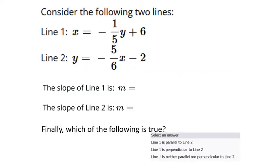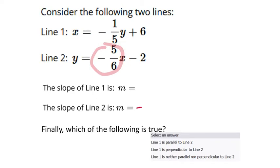Consider these two lines. I thought they were both in slope-intercept form, but they are not. Don't let it get you either — it's x equals something y plus something else, which we don't want. The slope of line 2 is given right there: negative 5 sixths. If line 1 is parallel, it has to have the same slope, negative 5 sixths. If it's perpendicular, the slope would have to be 6 fifths. Let's find out what it actually is.